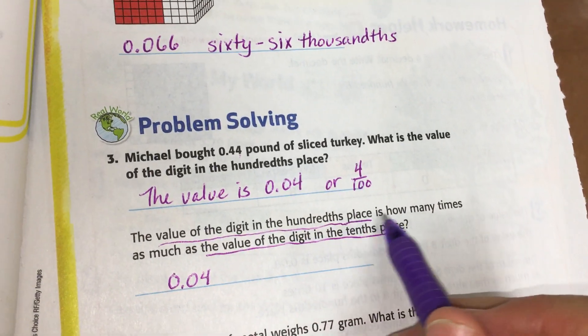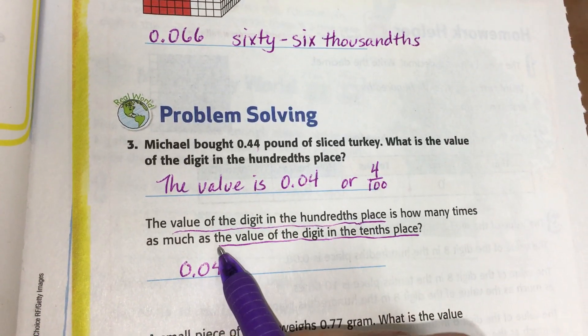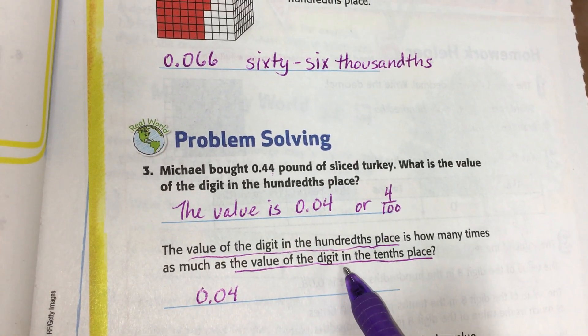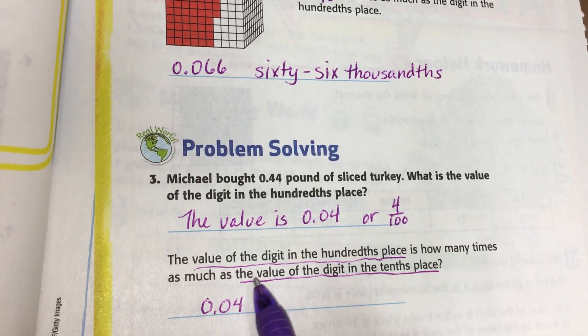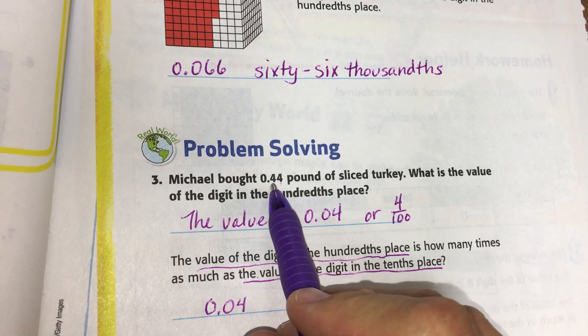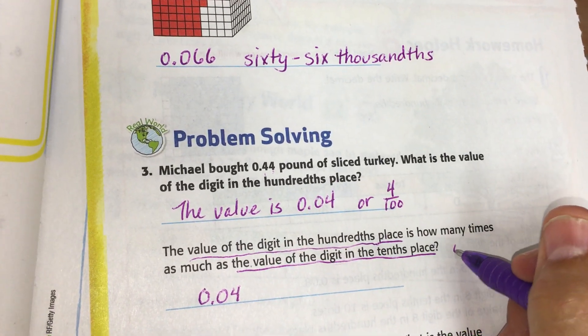Is how many times as much as the value of the digit in the tenths place. So the value of the digit in the tenths place is right here and its value is four tenths.